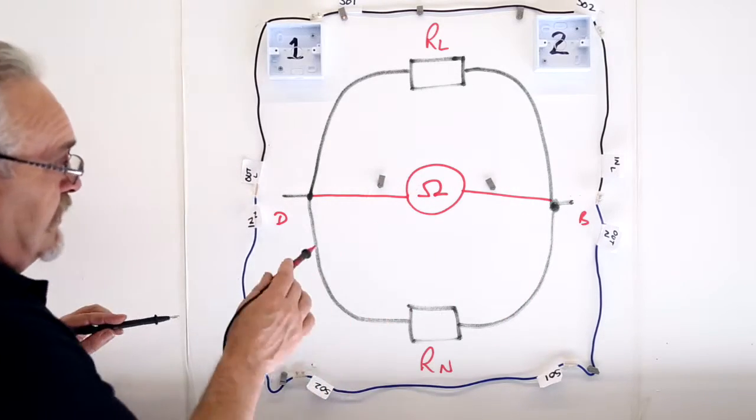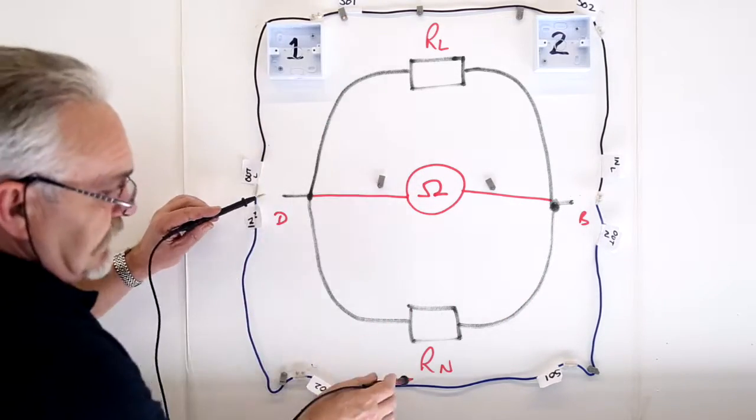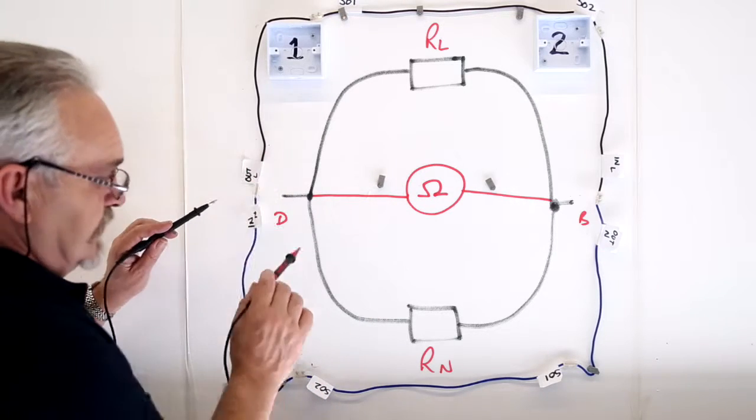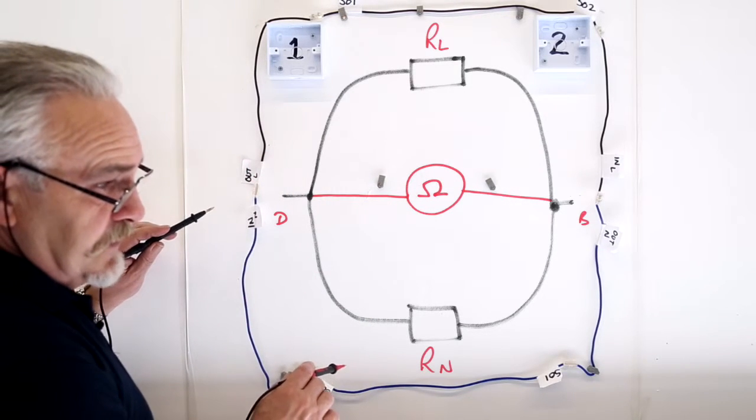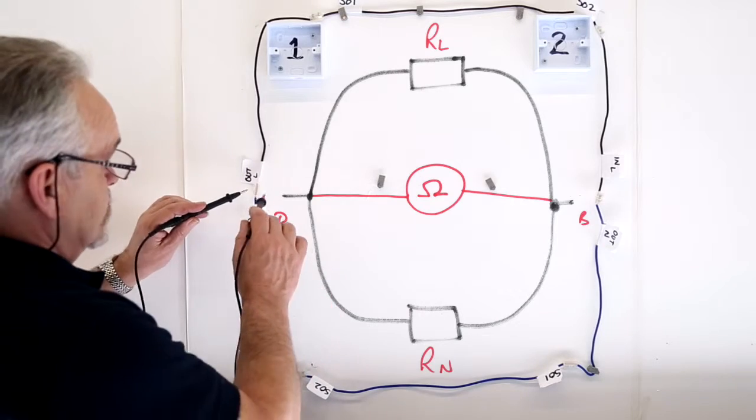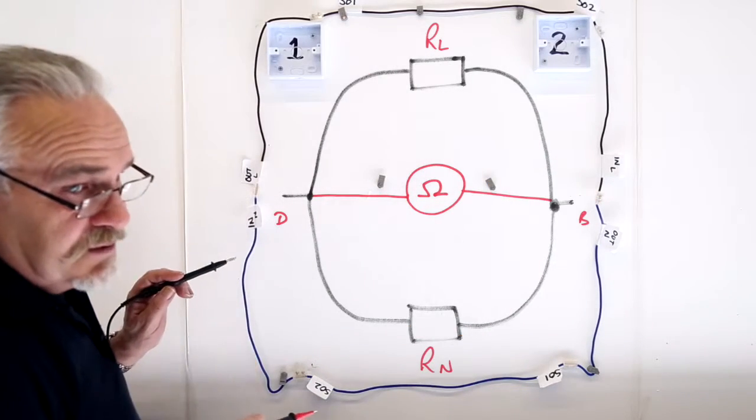Now, you already know, those two are the same length. It's a ring main. Those two are the same cross sectional area. Therefore, both halves will have the same resistance.